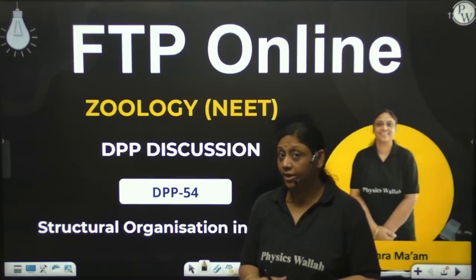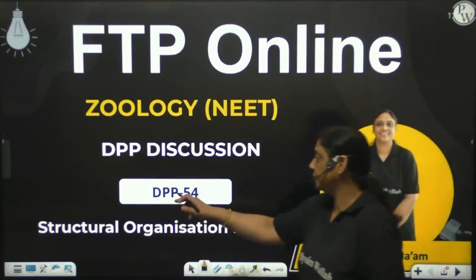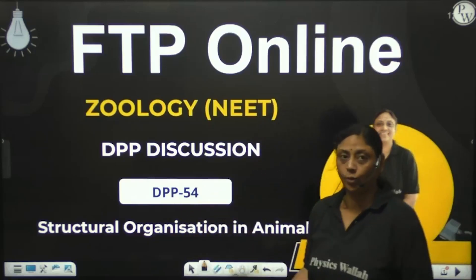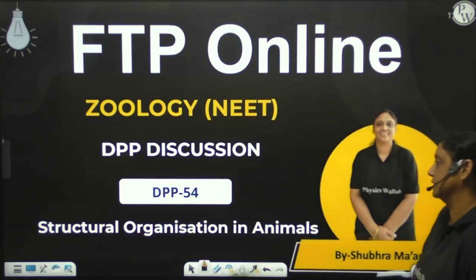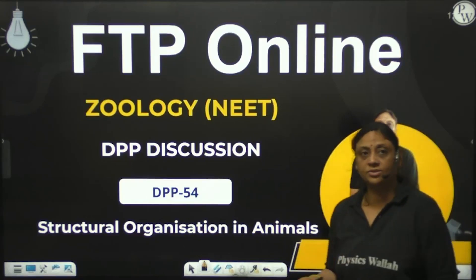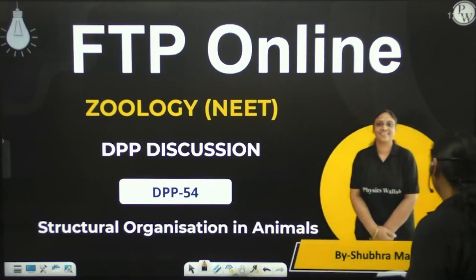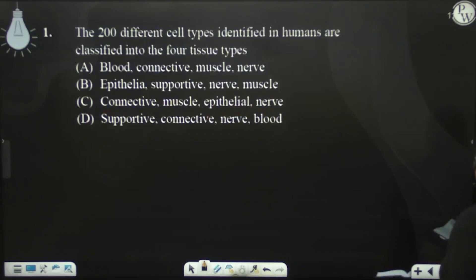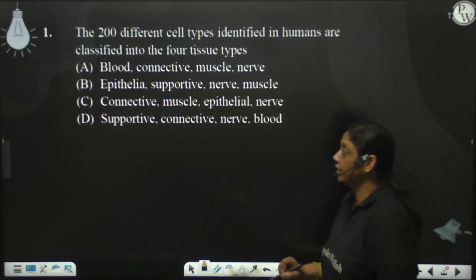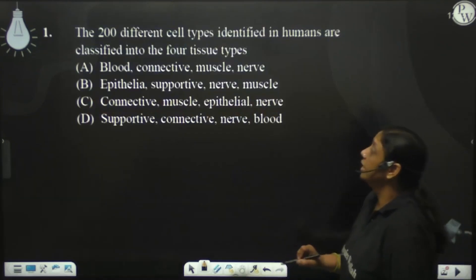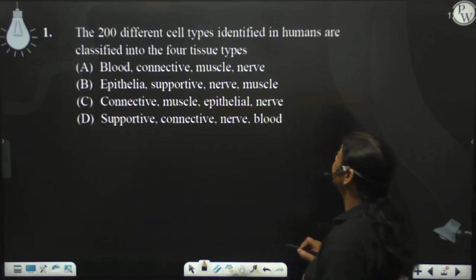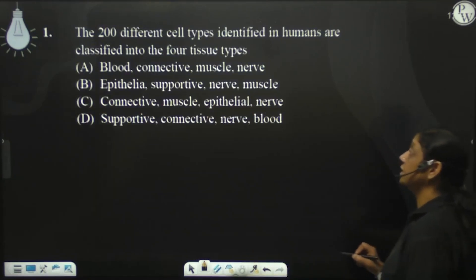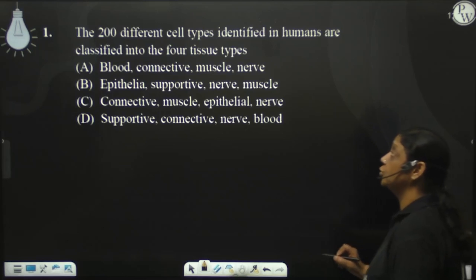Hello teachers, today we are going to discuss DPP 54 and it is regarding structural organization in animals. Shall we start? This is question number 1 on the board. It is saying: the 200 different cell types identified in humans are classified into 4 tissue types.